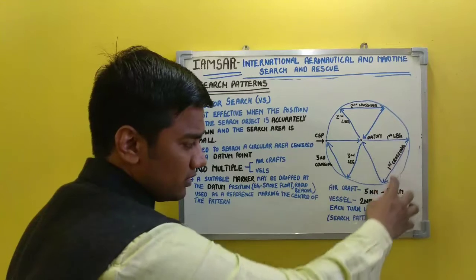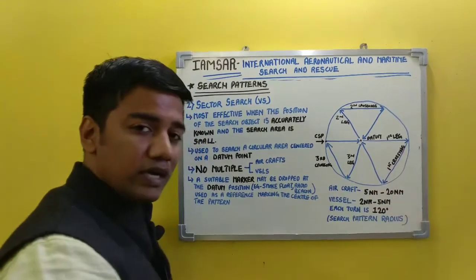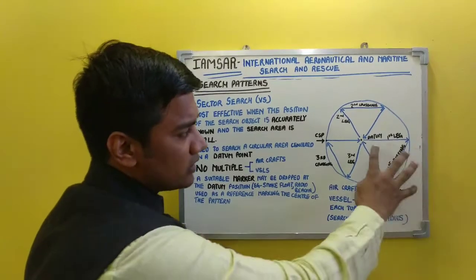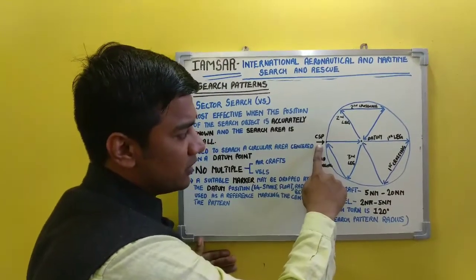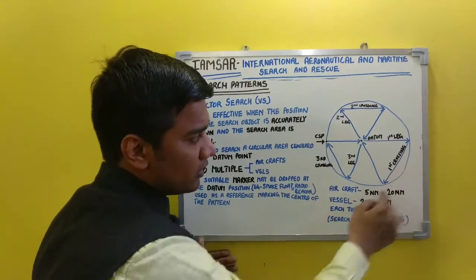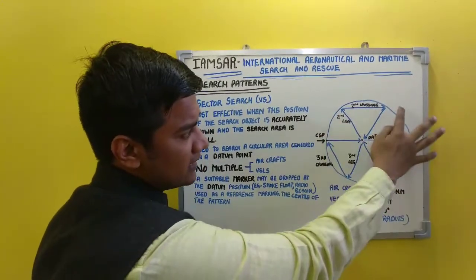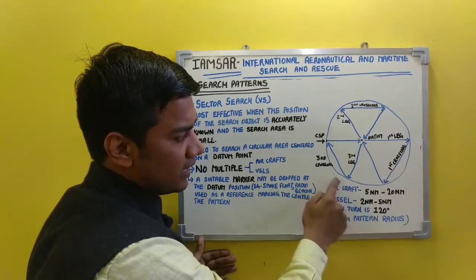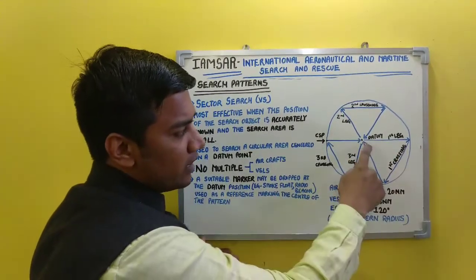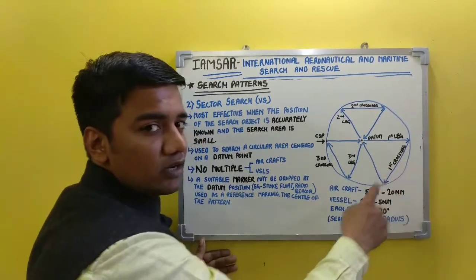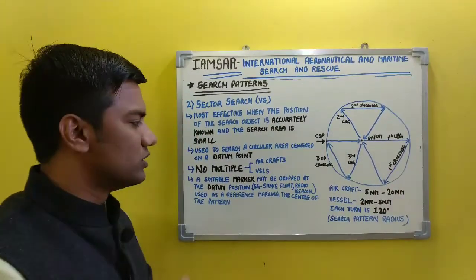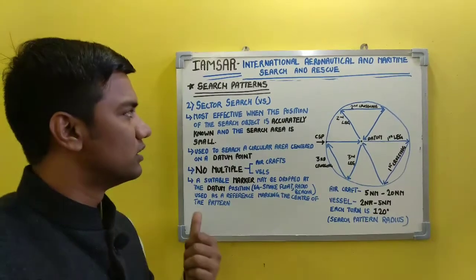Each turn in sector search is 120 degrees. Looking at the diagram: this is the commencement of the search point, this is the first leg, first crossing, second leg, second crossing, third leg, and third crossing. Once this cycle is completed, you take a 30-degree deviation in order to go for the second cycle. So this is all about your sector search.